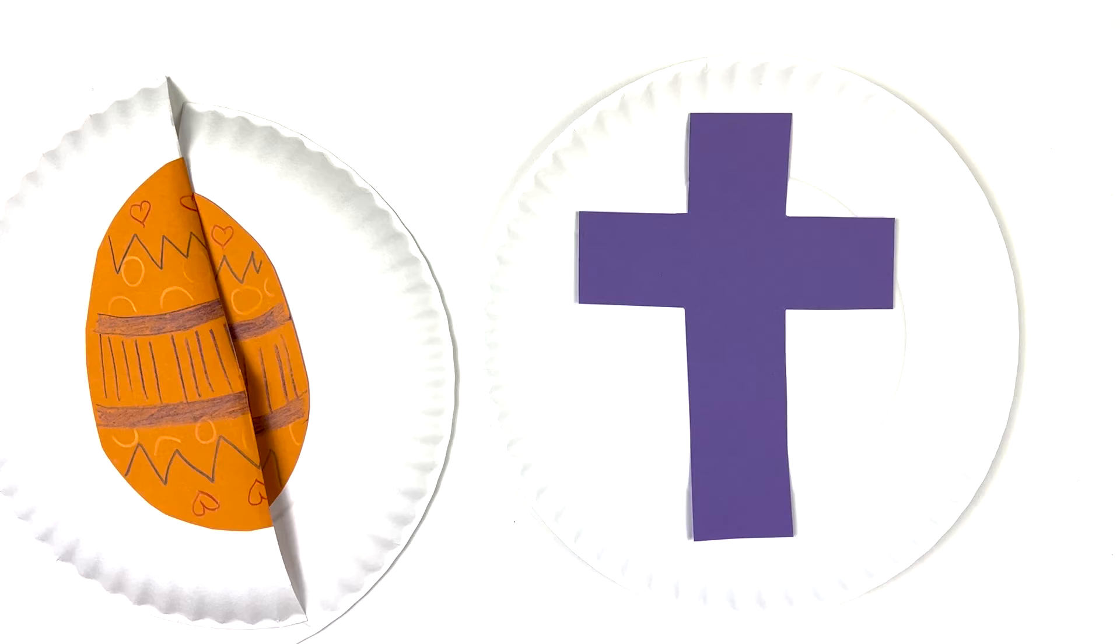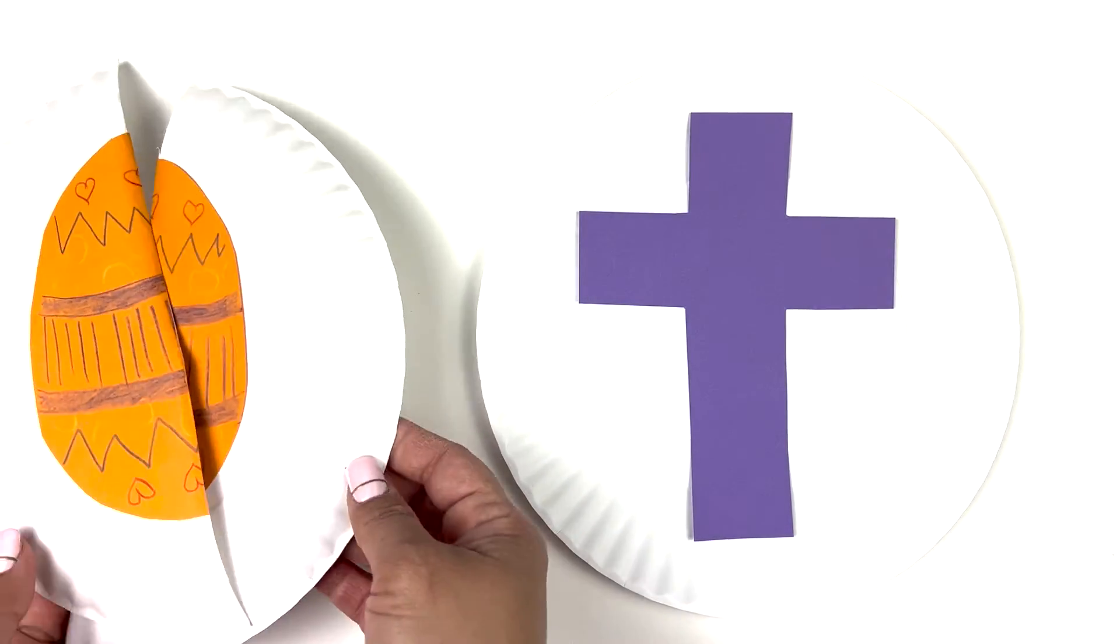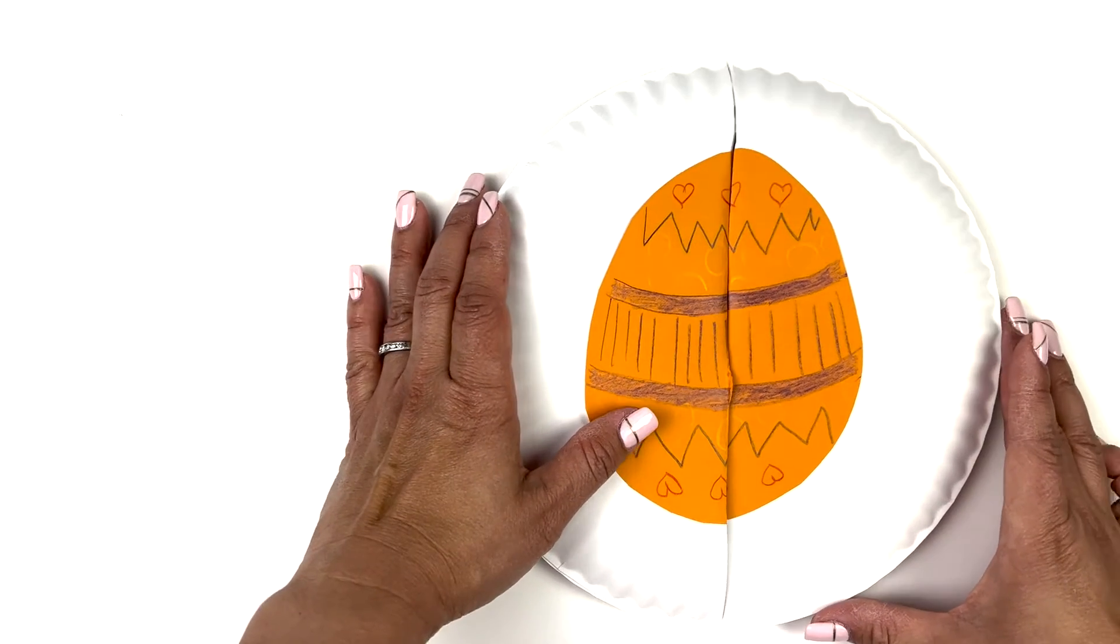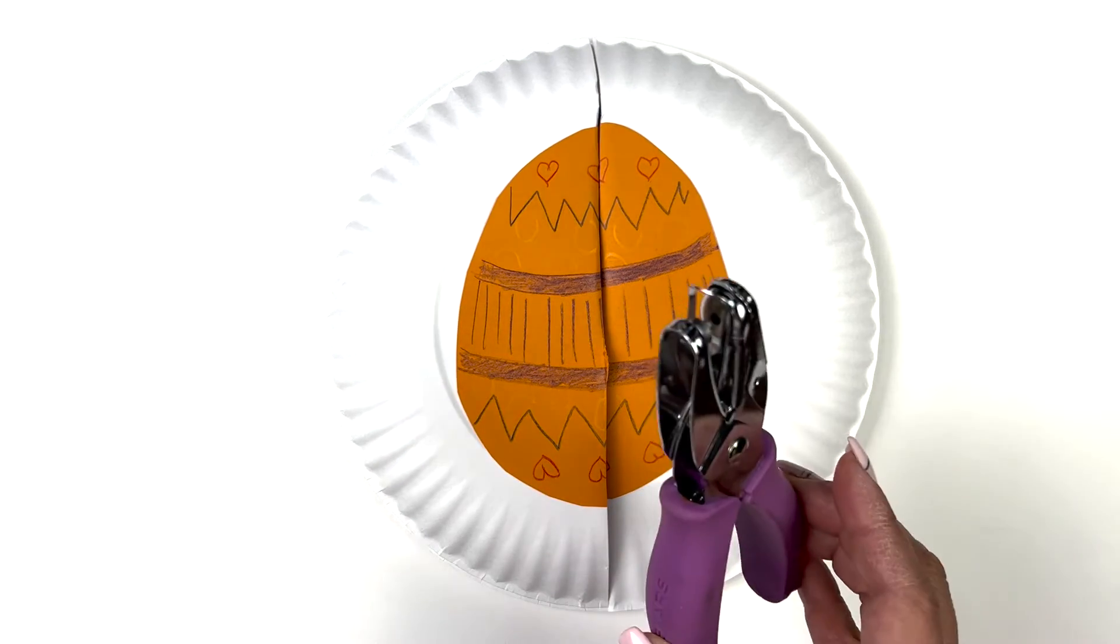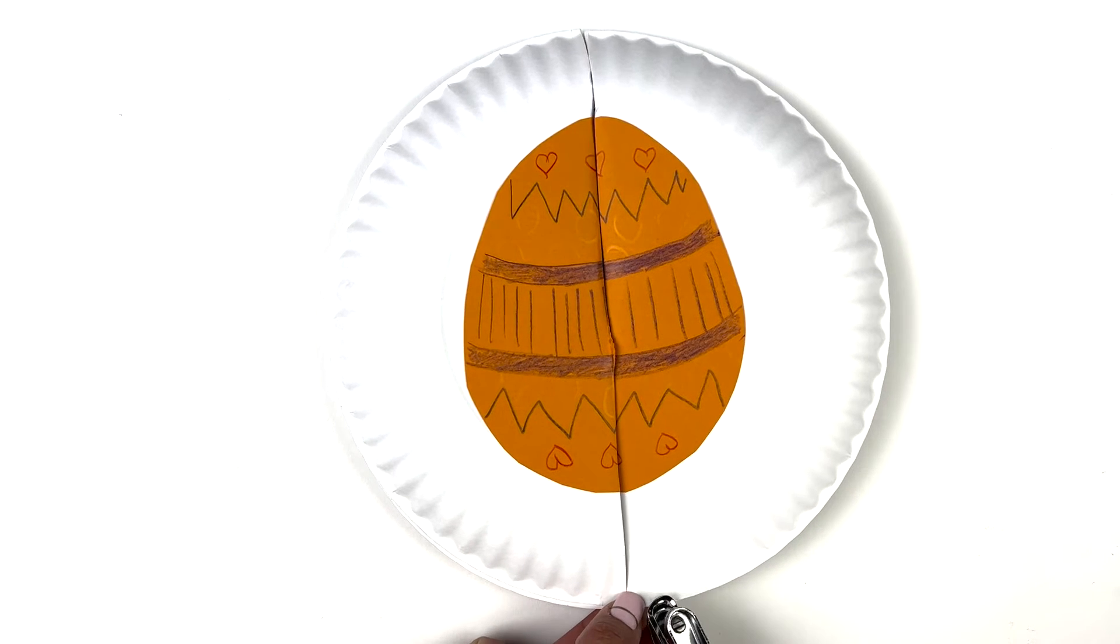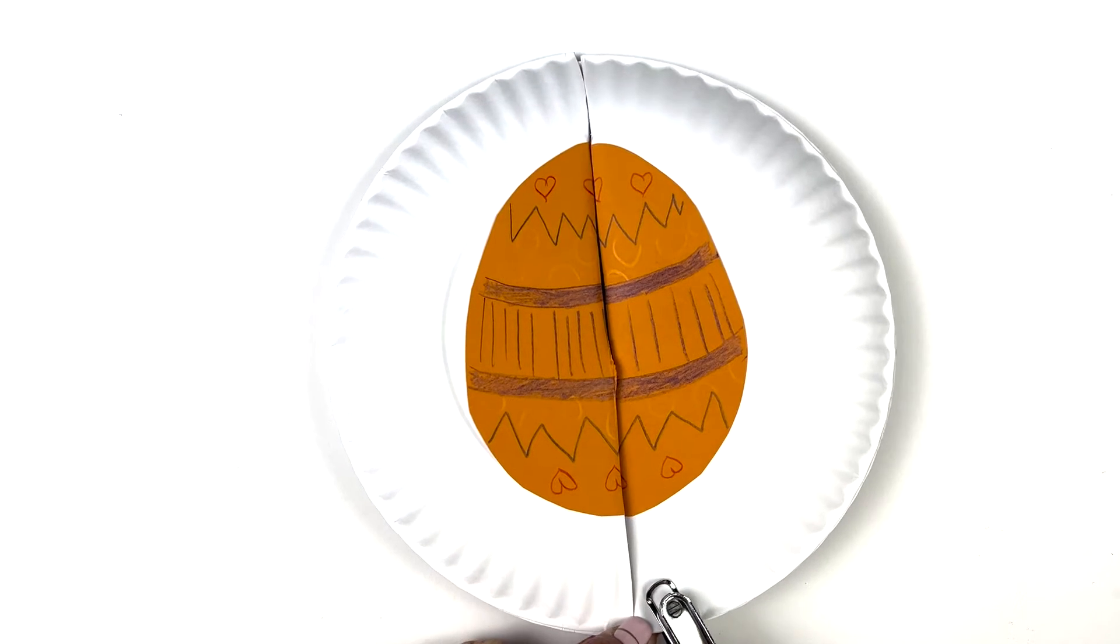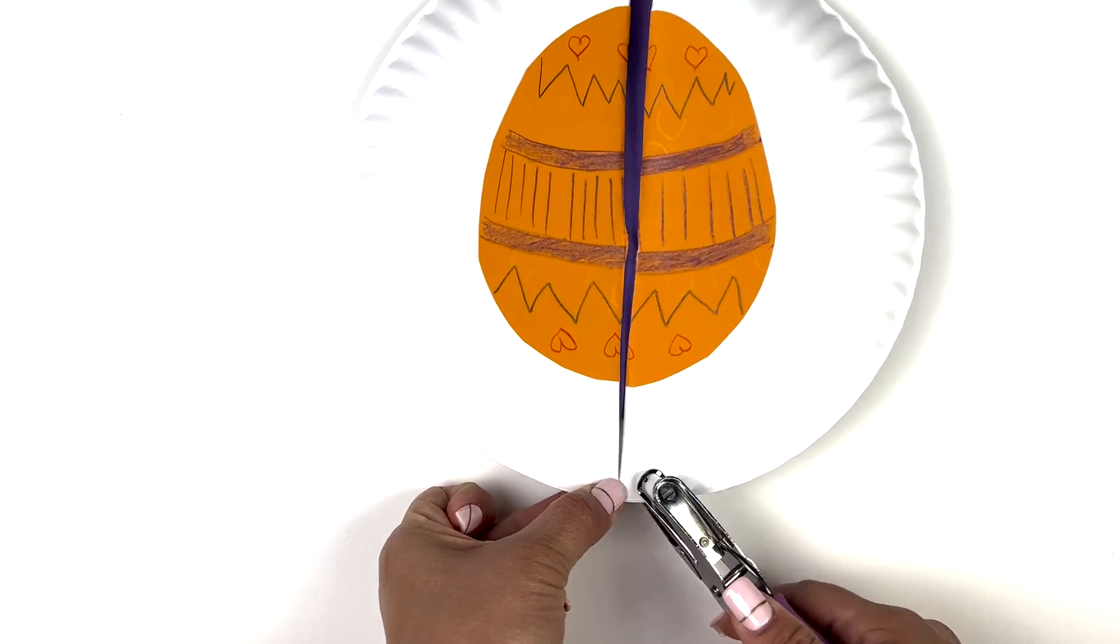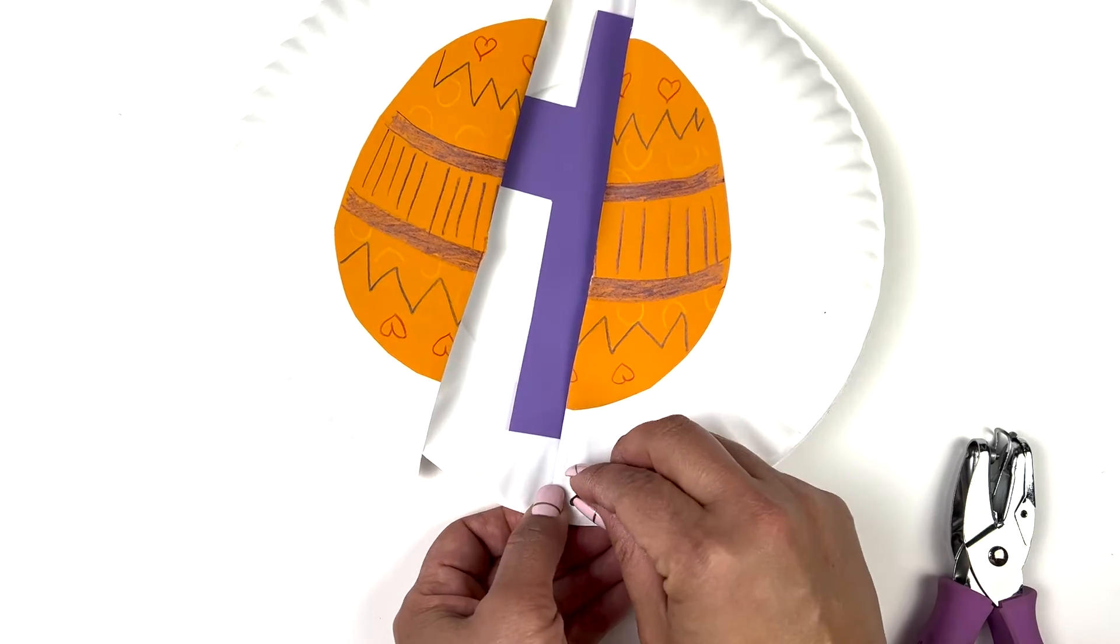Now, we're going to take our other plate and we're going to put this on top just like that. So, it closes over it. We're going to take our hole punch and we're going to just put a hole punch right at the bottom of this corner and the paper fastener in place.